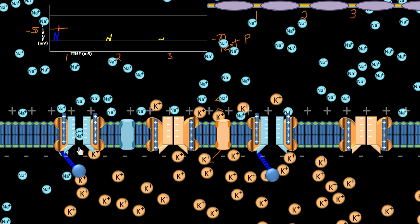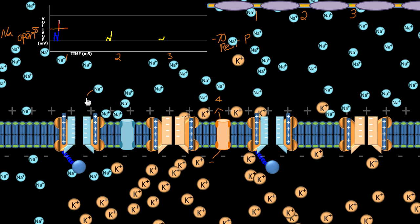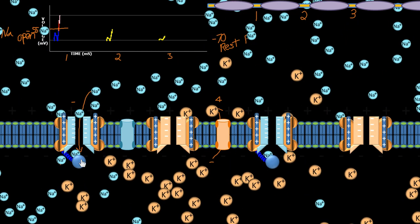Now we have the sodium channel open. Threshold is when the sodium channel opens. So the sodium channel opens and sodium starts going through this channel. Remember, sodium is a positive ion, so it's making the outside more negative and the inside more positive as it travels through — decreasing the positivity on the outside and increasing the negativity on the inside. If we keep watching, we'll notice it will pass zero — there will no longer be a voltage across the membrane, so this is actually zero volts.